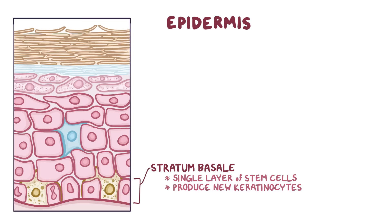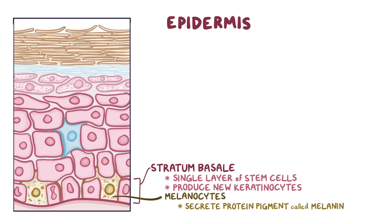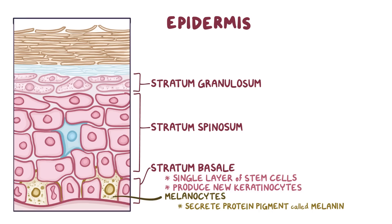New keratinocytes migrate upwards to form the other layers of the epidermis. The stratum basale also contains melanocytes, which secrete a protein pigment called melanin. As keratinocytes in the stratum basale mature and lose the ability to divide, they migrate into the next layer called the stratum spinosum, which is about 8 to 10 cell layers thick. The next layer up is the stratum granulosum, which is 3 to 5 cell layers thick. Keratinocytes in this layer begin the process of keratinization, where the keratinocytes flatten out and die.